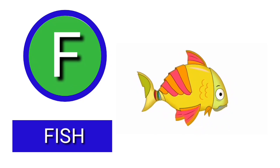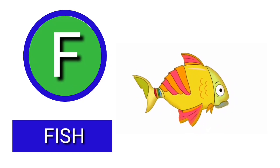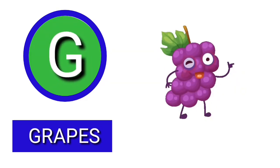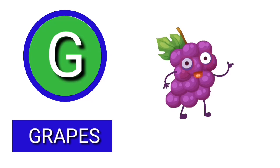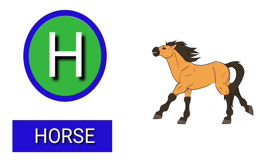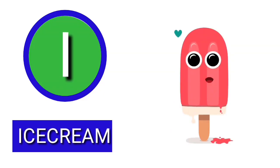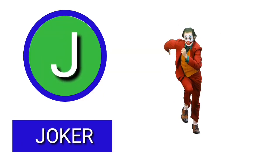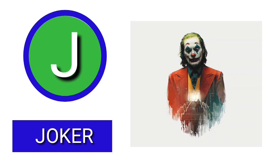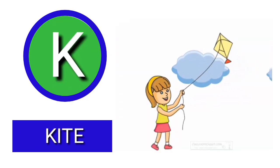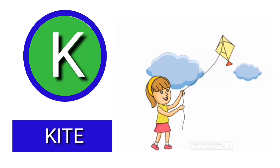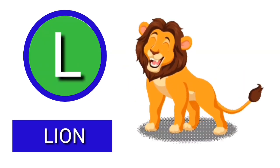F for fish, G for grapes, H for horse, I for ice cream, J for joker, K for kite, L for lion.